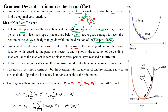Gradient descent works by measuring the local gradient of the error. The gradient is the direction of movement, applied by updating the parameter theta. The gradient function is used to update the parameter theta to reach the bottom of the valley quickly in the direction of descending. When we reduce the value of the gradient, we go with the gradient descent approach.